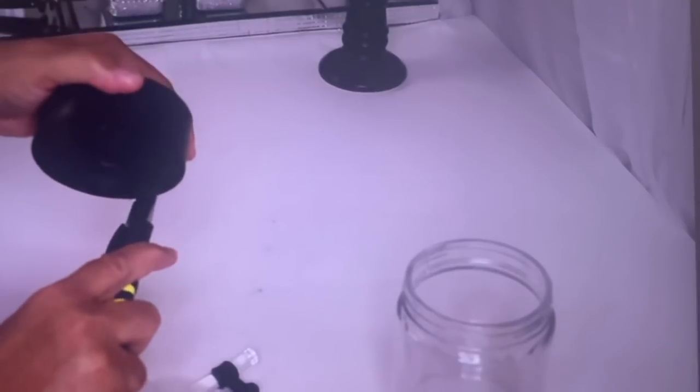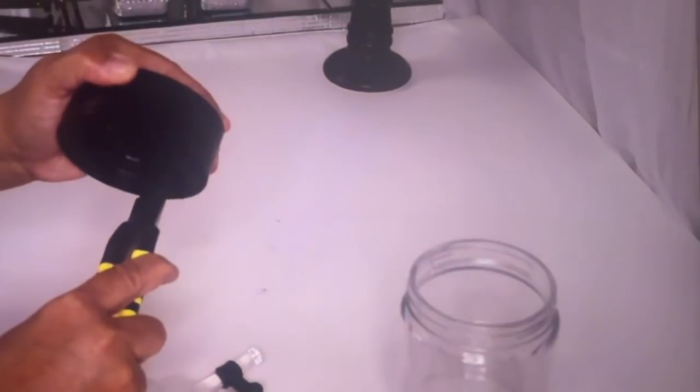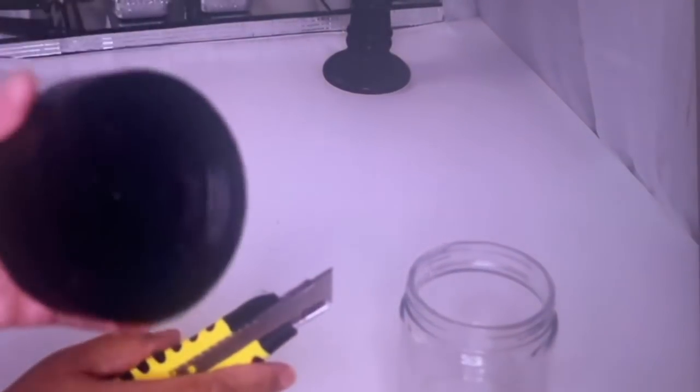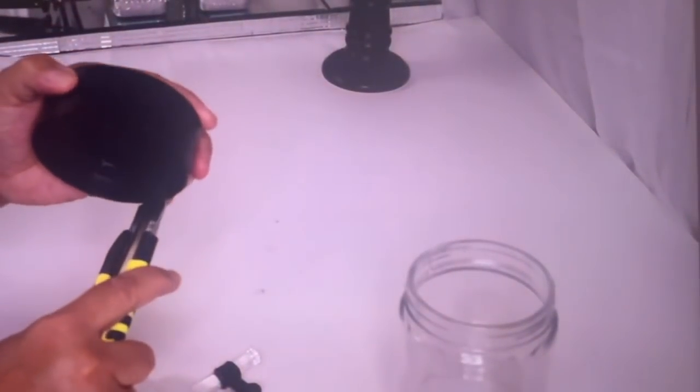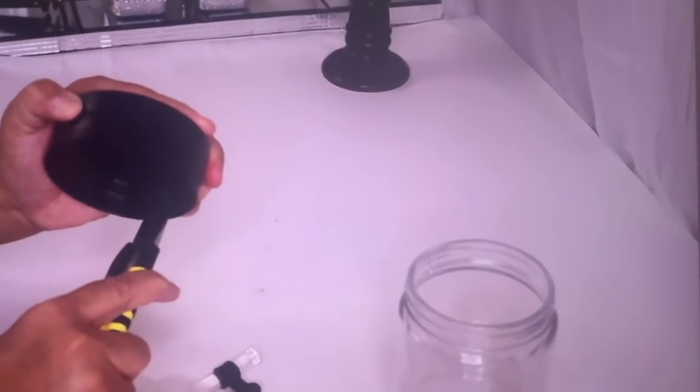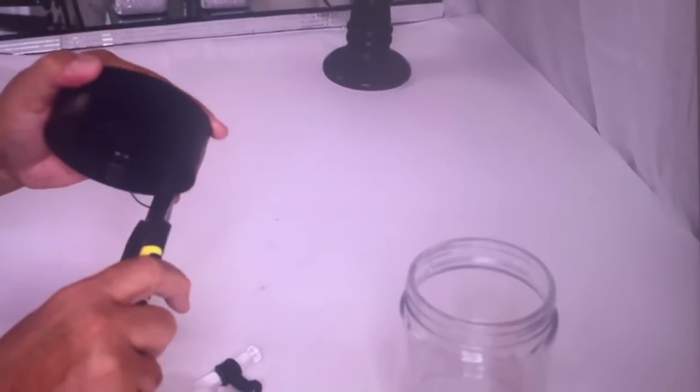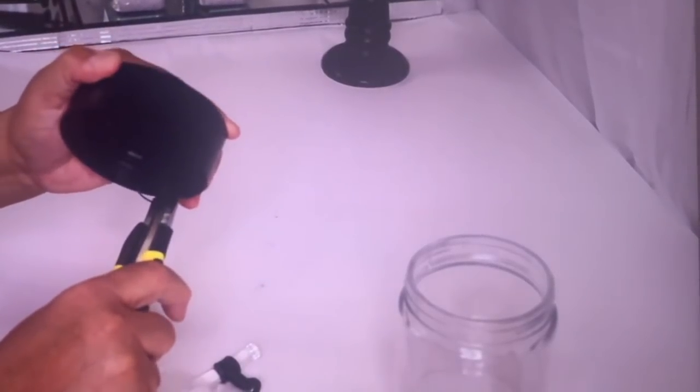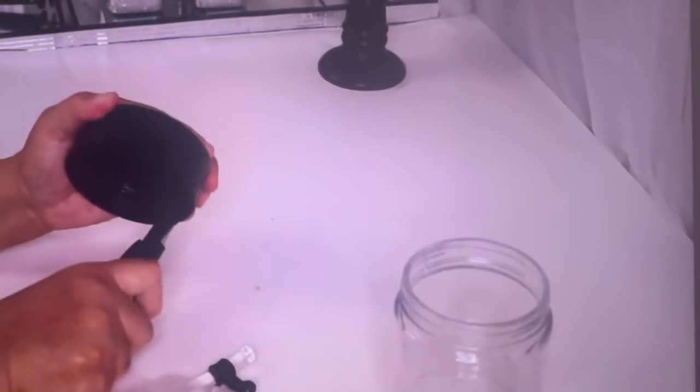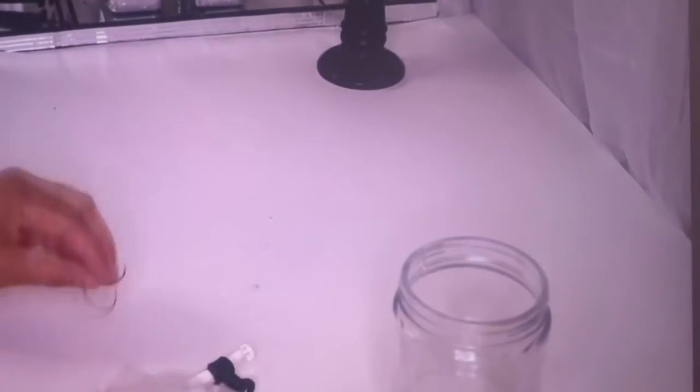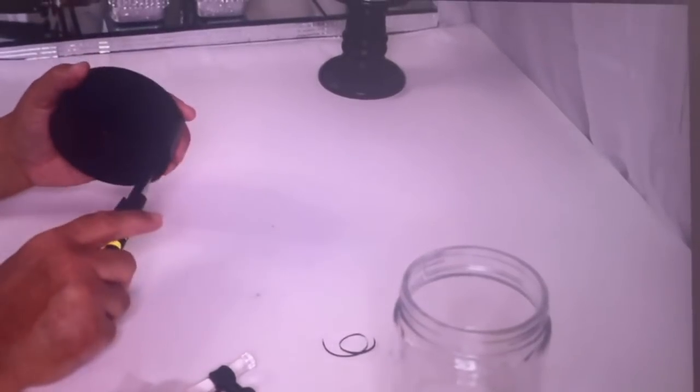So what you want to do is just take your knife and just put it right along that thread. Can you see that curling out? And just cut the thread out. Be careful because you don't want to cut yourself.